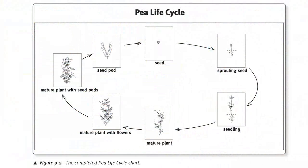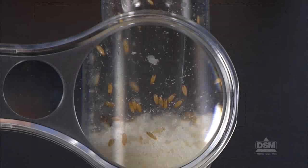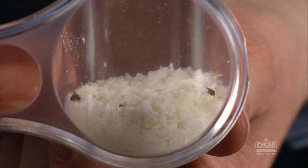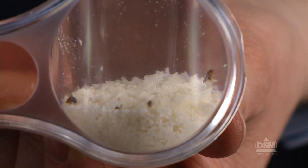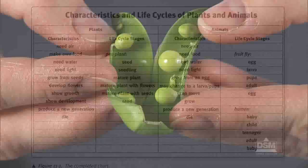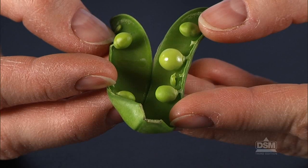They trace the growth of peas from germination to flowering plants that produce new seeds. Simultaneously, they observe fruit fly larvae become pupae and see emerging adults lay eggs of a new generation. Students then use their own charted data to compare the life cycles of plants and animals and analyze one plant's germination success rate.